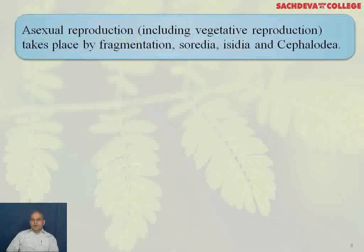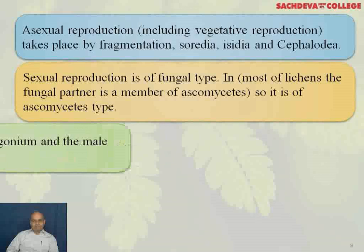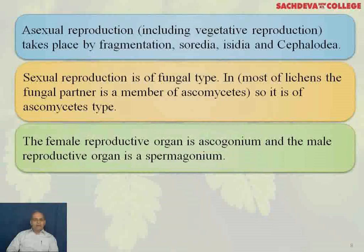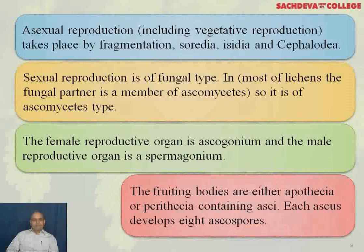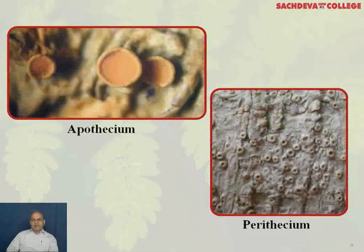Asexual reproduction, including vegetative reproduction, takes place by fragmentation, soredia, isidia, and cephalodia. Sexual reproduction is of the fungal type, and in most lichens the fungal partner is a member of Ascomycetes, so it is of the Ascomycetes type. The female reproductive organ is the ascogonium and the male reproductive organ is the spermatogonium. The algal partner does not take part in sexual reproduction. The fruiting bodies are either apothecia or perithecia, containing asci, and each ascus develops 8 ascospores. You can see the cup-shaped fruiting body called an apothecium and the flask-shaped fruiting body called a perithecium.